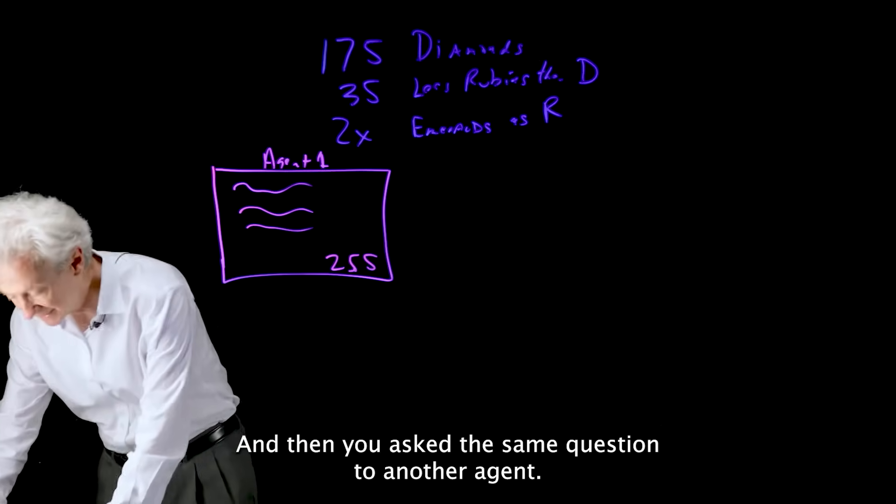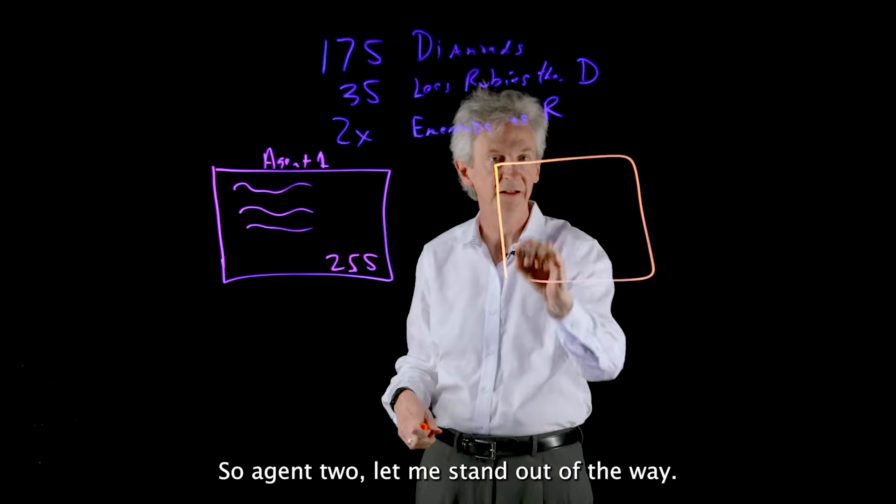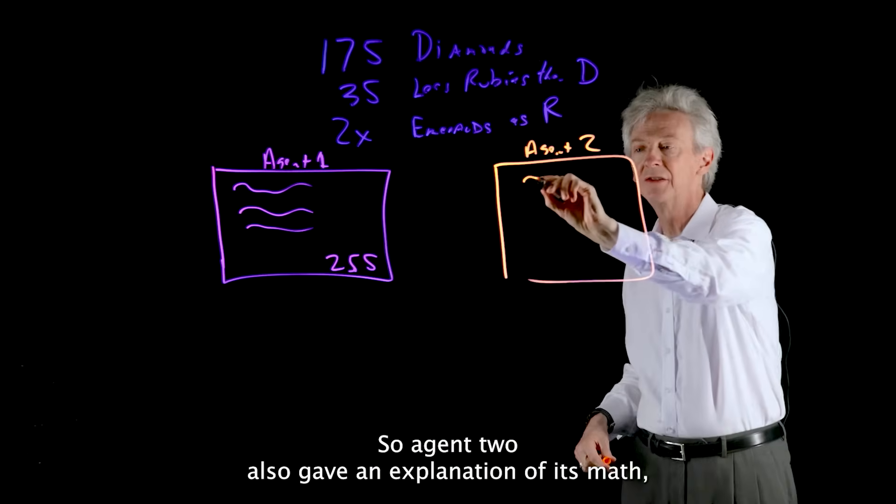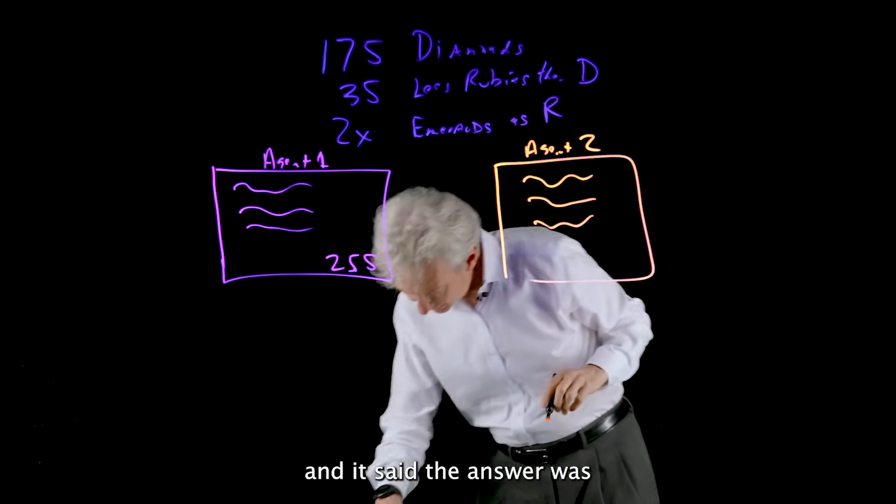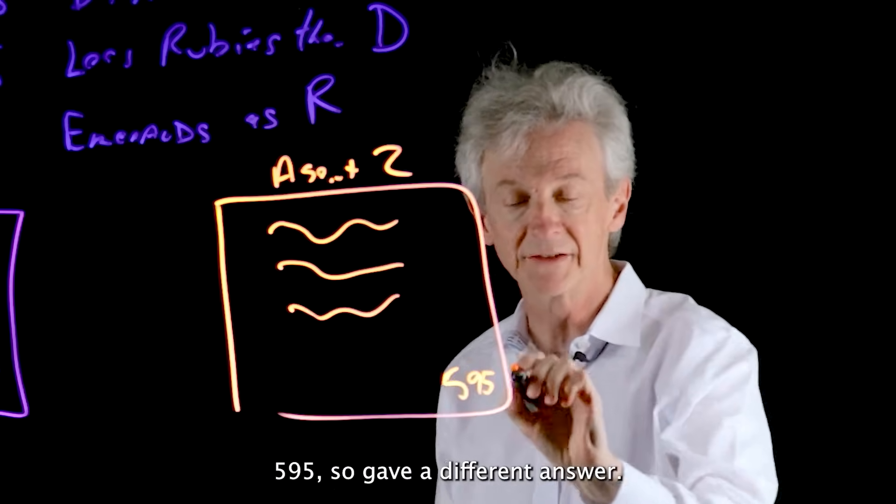And then you asked the same question to another agent. So agent two, let me stand out of the way. So agent two also gave an explanation of its math. And it said the answer was 595. So it gave a different answer.